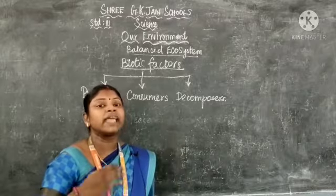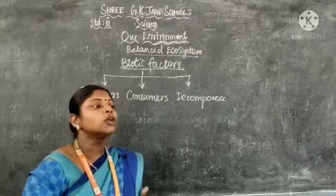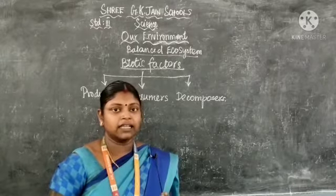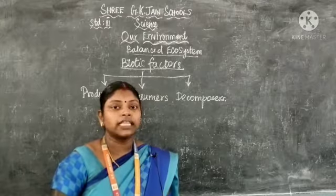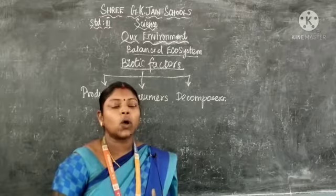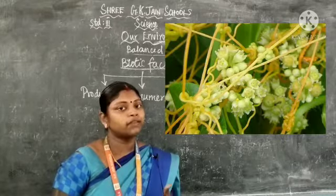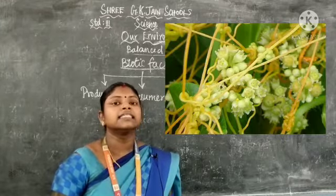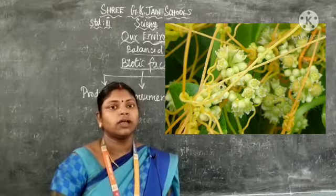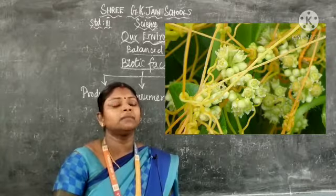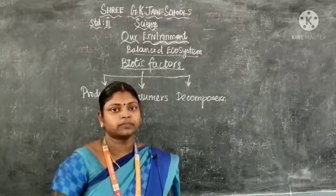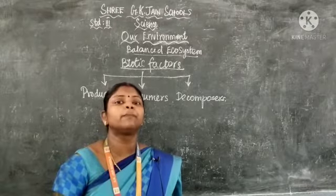This process is called photosynthesis. Not all plants produce their own food — some plants feed on other plants. They feed on smaller plants and are called parasitic plants. Cuscuta is an example of a parasitic plant; it does not prepare its own food. Green plants, however, all produce their own food, which is why they are called primary producers.